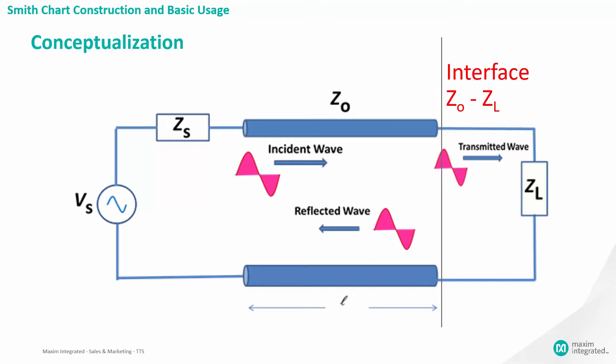The above circuit summarizes the problem. The source VS with an internal impedance ZS is transmitting its signal to the receiving device ZL via a communication channel. Some examples of the communication channel can be a coax cable, a twisted pair, or a copper trace in a PCB.